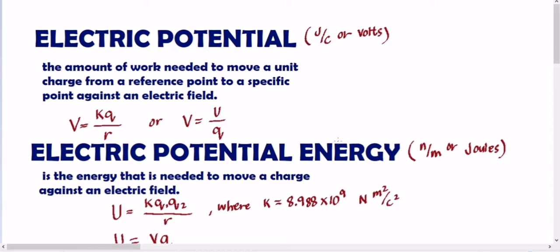So the first one, the electric potential is the amount of work needed to move a unit charge from a reference point to a specific point against an electric field. While the electric potential energy is the energy that is needed to move a charge against an electric field. So yung pagkakaiba lang, yung electric potential is the amount of work, yung electric potential energy naman, yung energy na kailangan natin to move a charge against an electric field.